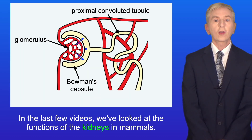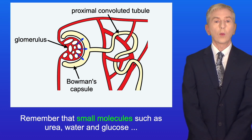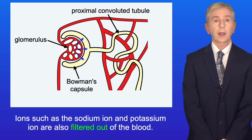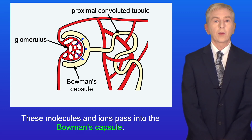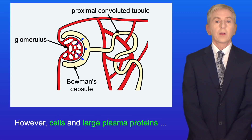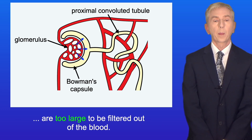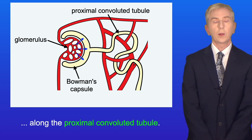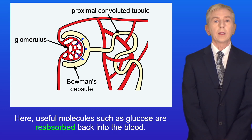In the last few videos, we've looked at the functions of the kidneys in mammals. Remember that small molecules such as urea, water and glucose are filtered out of the blood as it passes through the glomerulus. Ions such as the sodium ion and potassium ion are also filtered out of the blood. These molecules and ions pass into the Bowman's capsule. However, cells and large plasma proteins are too large to be filtered out of the blood. The fluid that passes out of the blood then makes its way along the proximal convoluted tubule, where useful molecules such as glucose are reabsorbed back into the blood.